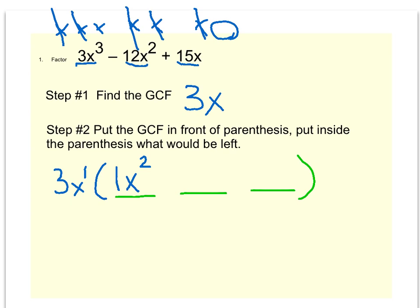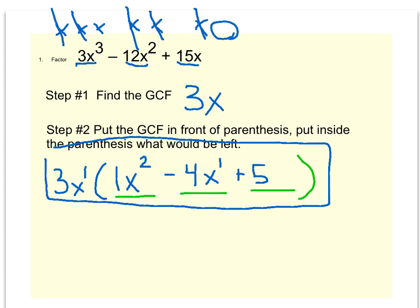Then ask: three times what gets me back to negative twelve? Three times negative four. And how many x's do we need? We have one x in the GCF, so we need one more to get back to x squared. For the last placeholder, three times what gets us back to positive fifteen? Positive five. And since we already have one x in the GCF and only need one, we don't put another x there. So this is our factored answer.